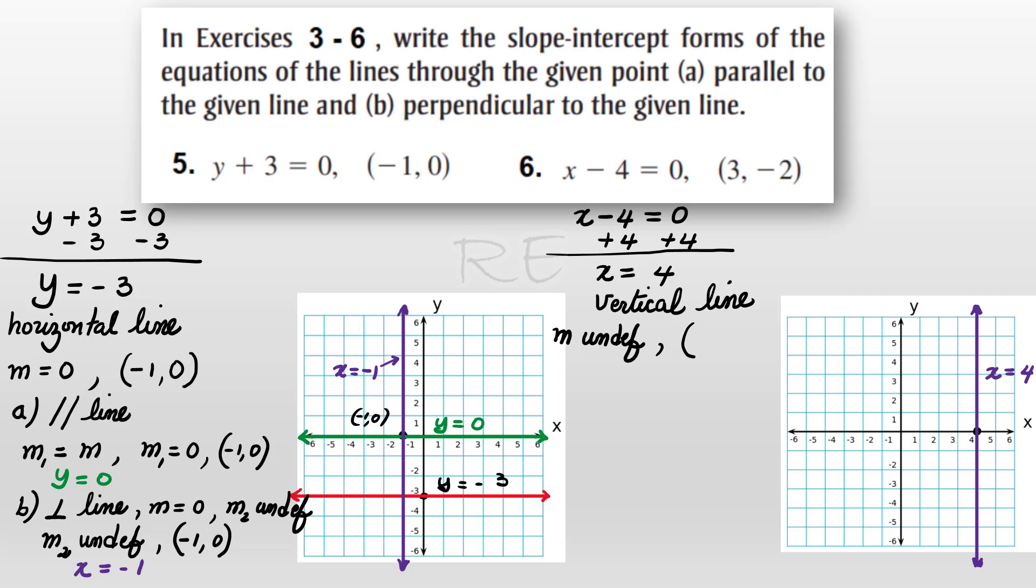Now we need, given an undefined slope and a point 3, negative 2, we need to find a parallel line to x equals 4. That parallel line will have also an undefined slope.